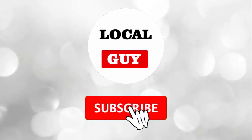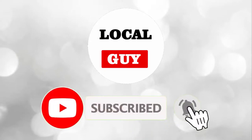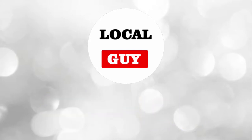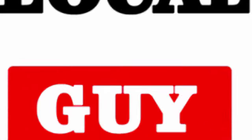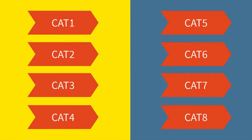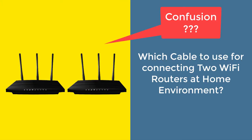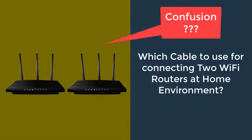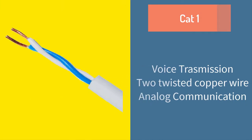Before starting the video, if you have not subscribed to my channel then please subscribe and press the bell icon for notifications. So there are many types of LAN cable like cat1, cat2, cat3, up to cat8. There is often confusion about what type of cable to use when connecting two wifi routers in a home environment. Let's check all the cables one by one.